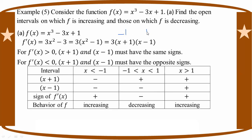We test values: for A less than minus 1, both A plus 1 and A minus 1 are negative, so F prime H is positive — increasing. For minus 1 less than A less than 1, A plus 1 is positive and A minus 1 is negative, so F prime is negative — decreasing. For A greater than 1, F prime is greater than 0 — increasing.